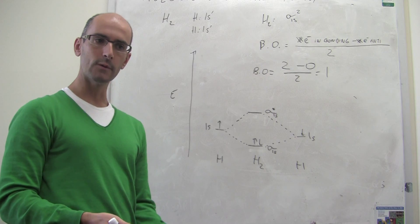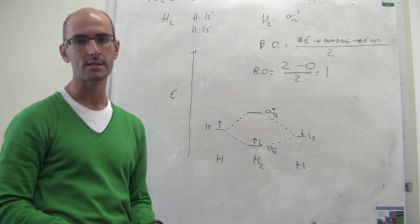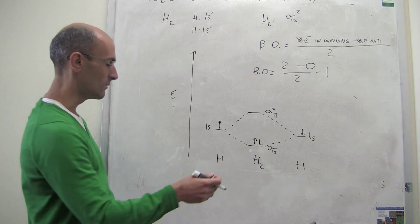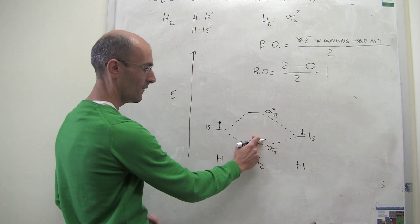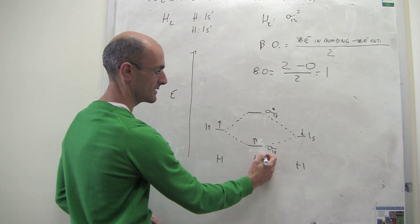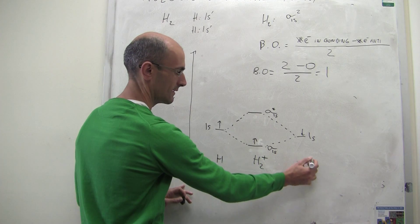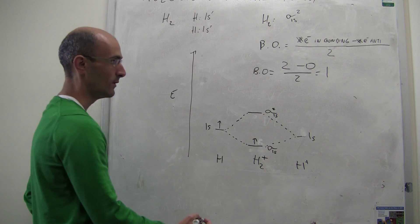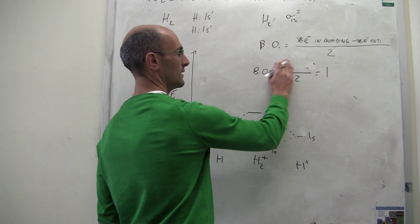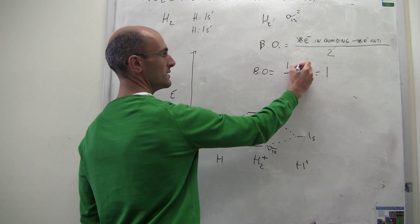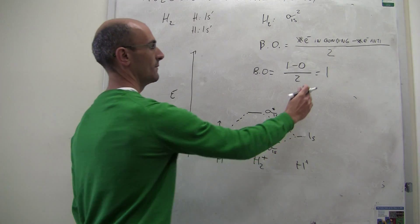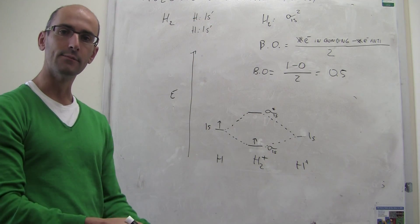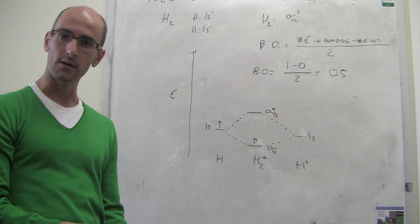For example, consider H2+, which is the same as H2 but with one electron less. The molecular orbital diagram is exactly the same, but you only have one electron total. That one electron goes into the sigma bonding orbital. The bond order for H2+ is one electron in a bonding orbital minus zero in antibonding, divided by two — a bond order of 0.5. So the bond in H2+ is not as strong as the bond in H2.